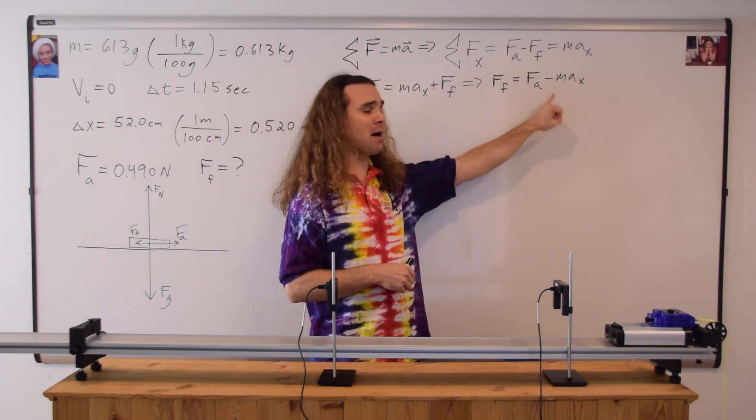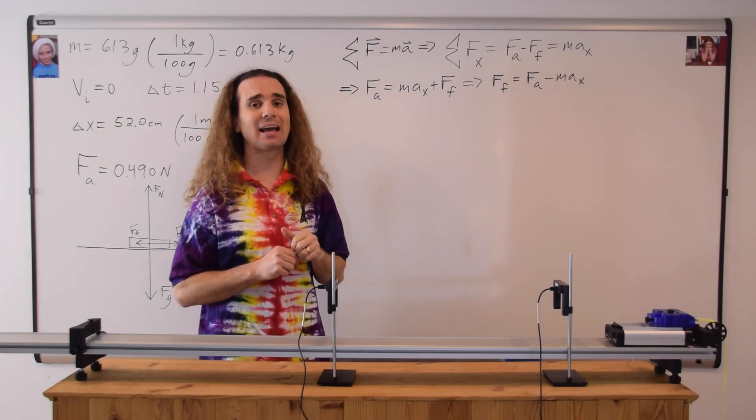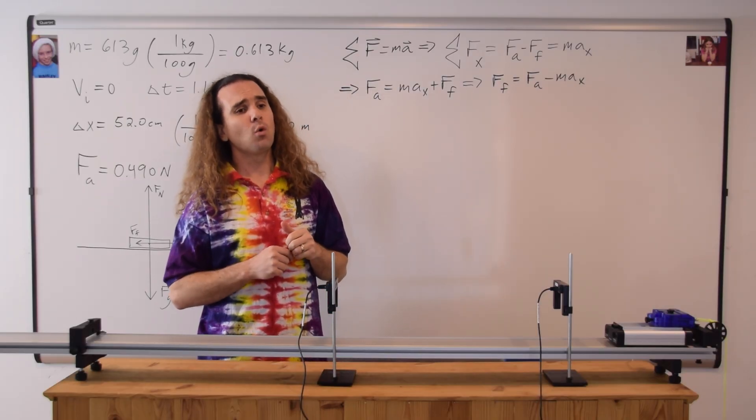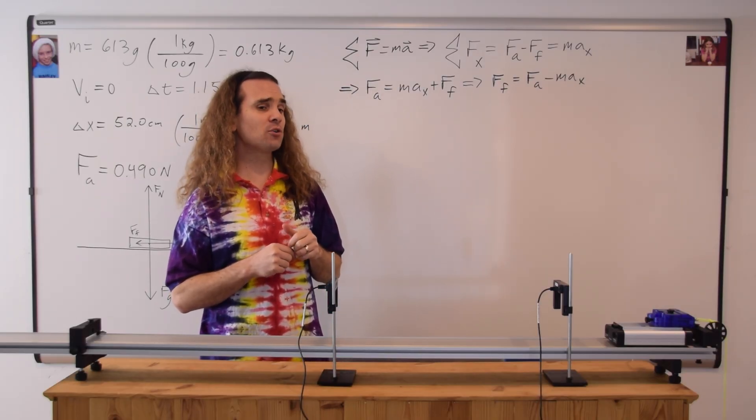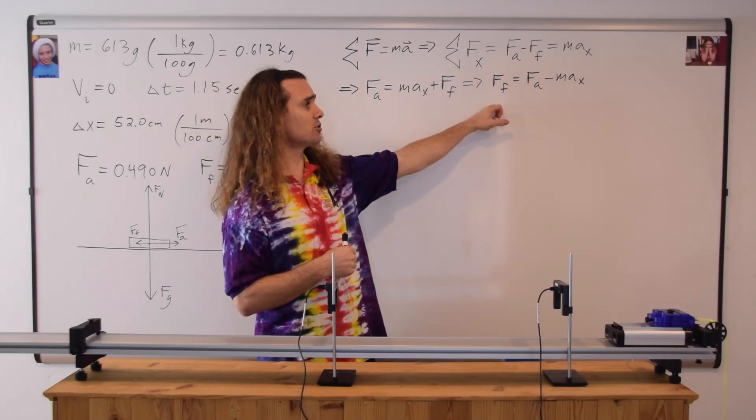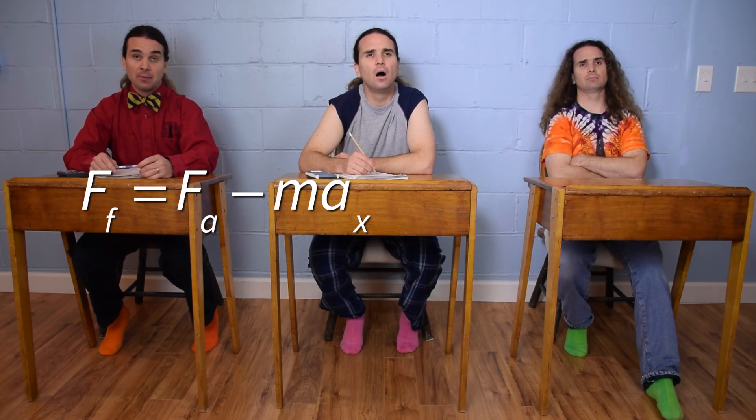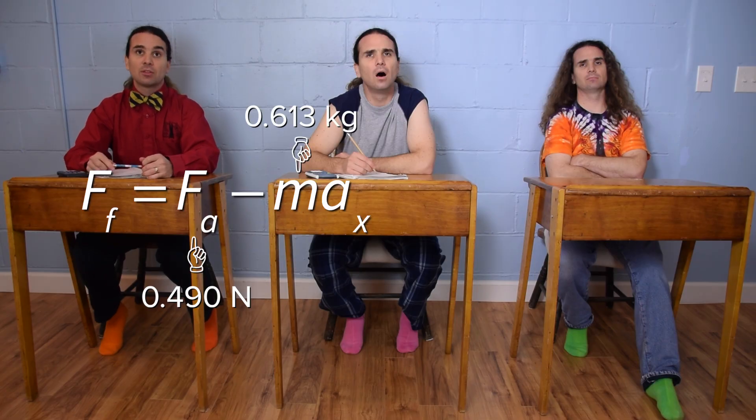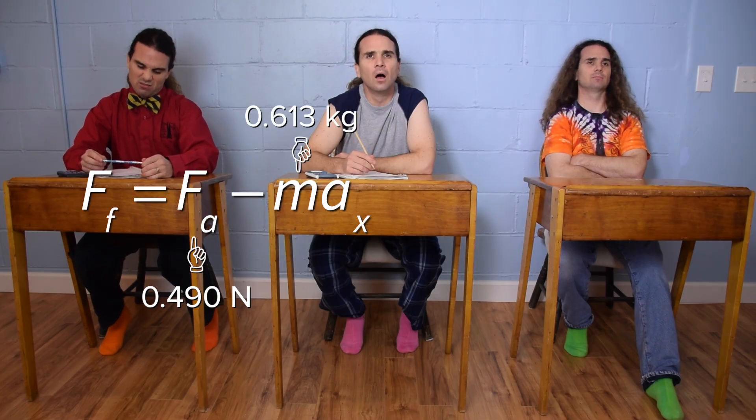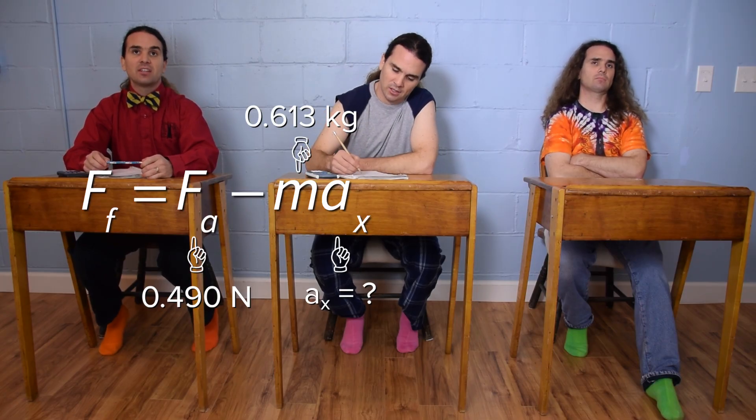Billy, what variable do we need to find in order to determine the force of friction? Well, we know the force applied is 0.490 newtons and the mass is 0.613 kilograms. However, we don't know the acceleration in the x-direction.